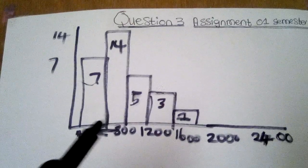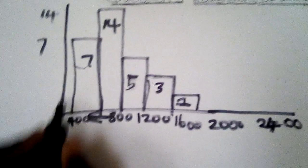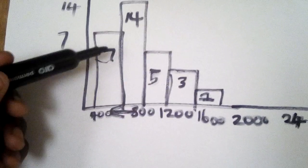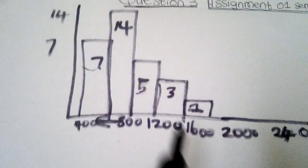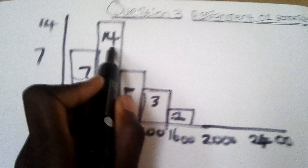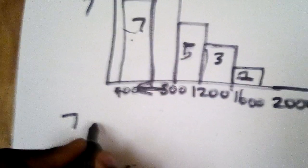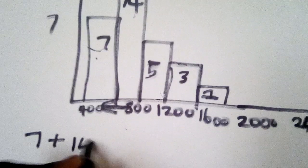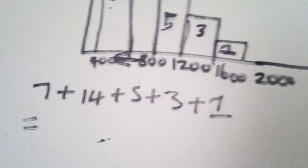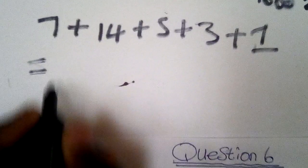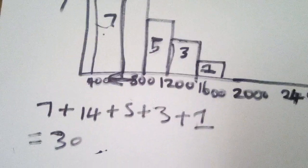So shoppers who spent $800 or less — that falls under the survey category. You can name it 'total amount spent.' When calculating the proportion, you need to add the numbers: 7 + 14 + 5 + 3 + 1, which gives you a total of 30.